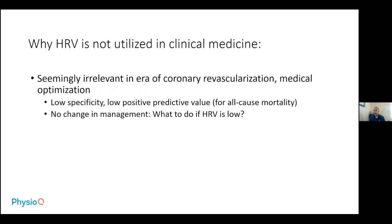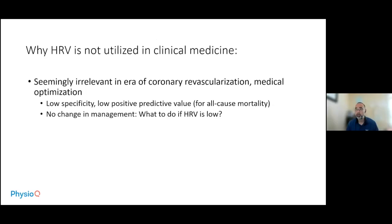We just did too good a job when addressing acute MI. And even if we had low heart rate variability, it really doesn't change what we do in the hospital. It doesn't change whether we would try to revascularize, whether we would administer beta blockers, ACE inhibitors, aspirin — the whole bit. So even if it's low, it doesn't change management. That's why heart rate variability is just not utilized, particularly in the hospital setting.